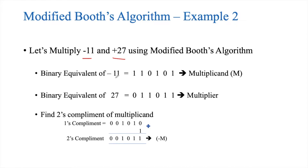We have to write the binary equivalent of minus 11 and plus 27. For minus 11, it is 1 1 0 1 0 1, and for plus 27, it is 0 1 1 0 1 1. Since minus 11 is a negative number, it is wise to calculate its two's complement. Finding the one's complement gives 0 0 1 0 1 0, and adding 1 results in 1 1 0 1 0 0. This is the two's complement of the multiplicand. If M is the multiplicand (minus 11), then negative M is this value.